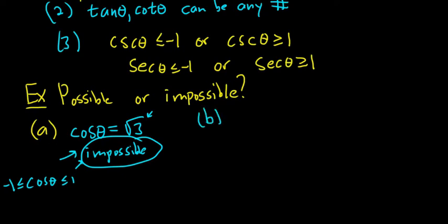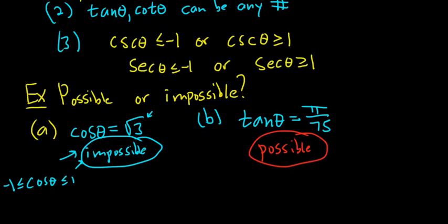B. What about tangent of theta equals pi over 75? Well, tangent can be any number, so this is possible. It's certainly possible for tangent to be equal to that because the range of tangent is all real numbers.